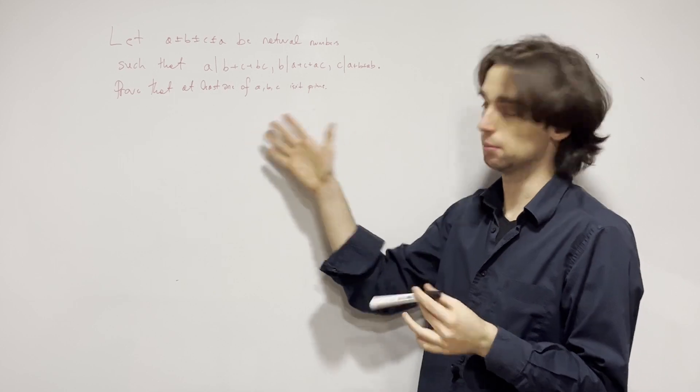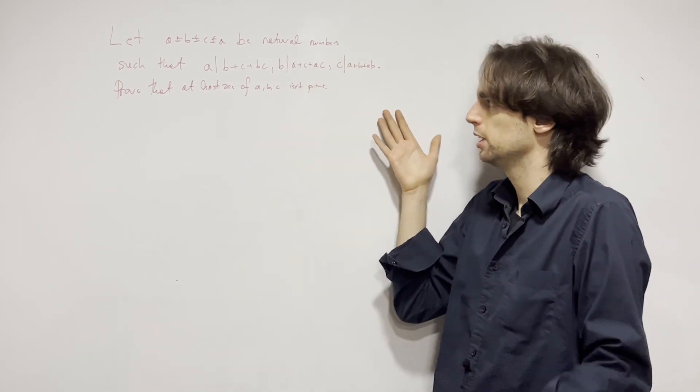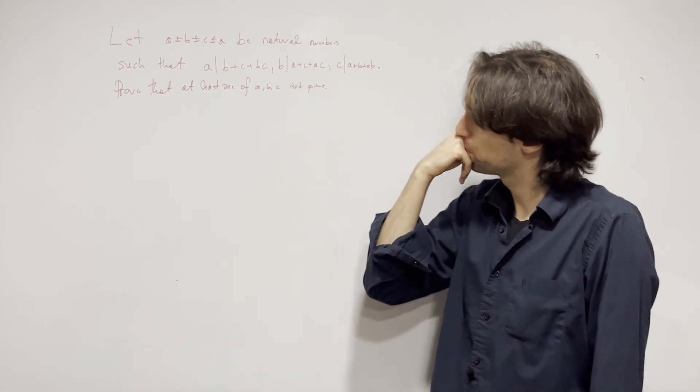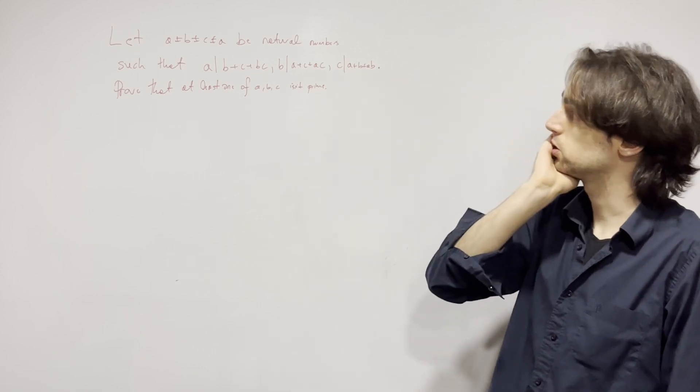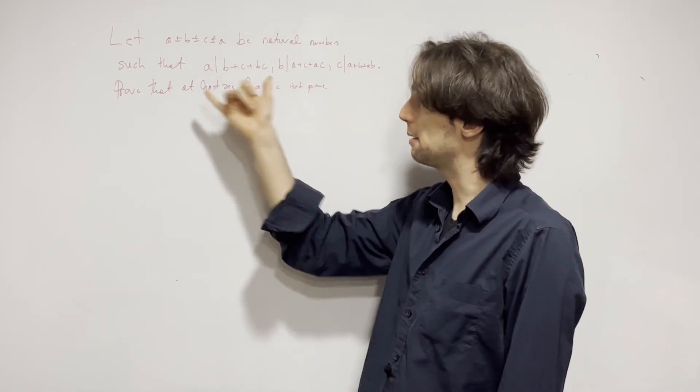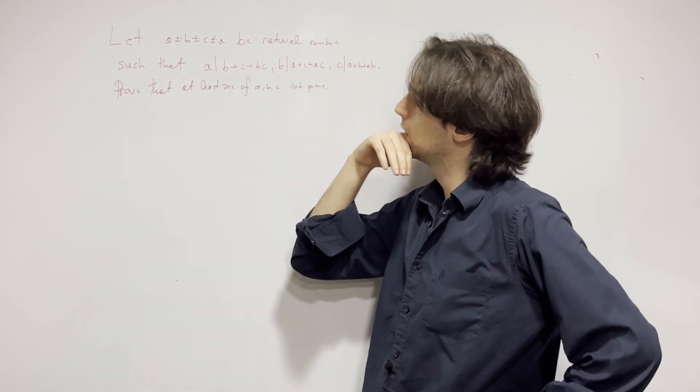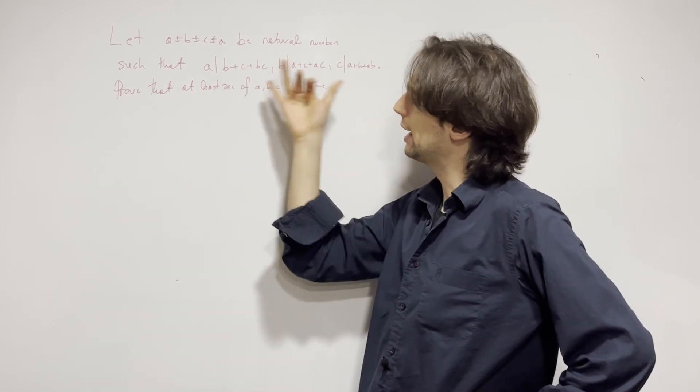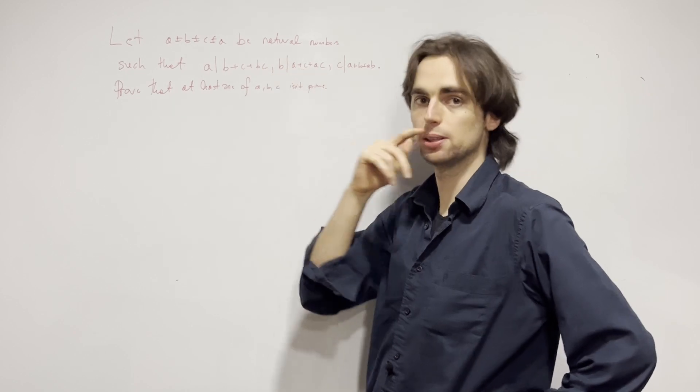Because if A and B are both prime, we're starting off by assuming all of these numbers are prime, and we want to reach a contradiction. So, if all of them are prime, then A and B are relatively prime.